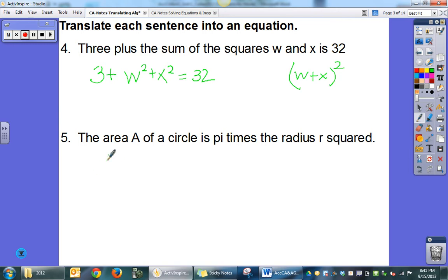The area A of a circle is pi times the radius r squared. So this is just a formula for area of a circle. Pi times r squared.